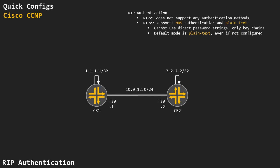In this video, I'm briefly talking about RIP authentication. I'm using a very simple network with two routers, CR1 and CR2, connected on a 10.0.12 network. I'm going to advertise loopbacks into RIP just to show a route in the routing table. We're focusing on authentication: RIP version 1 does not support authentication at all, while RIP version 2 supports MD5 and plain text, with plain text as the default. We can only use keychains — not direct password strings on interfaces.